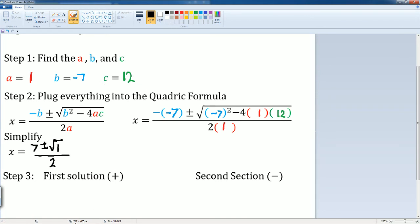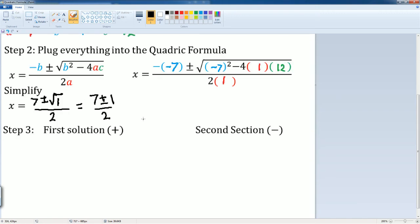But we know what radical 1 is. It's just 1. So it's 7 plus and minus 1 divided by 2. So my two solutions, the first one would be x equals to 7 plus 1 over 2. My second solution is x is equal to 7 minus 1 over 2.